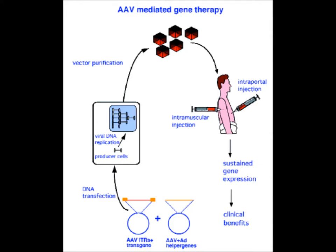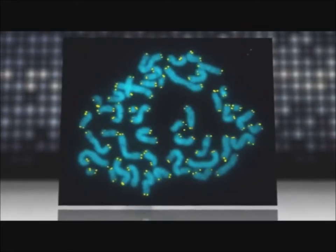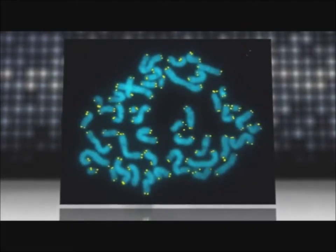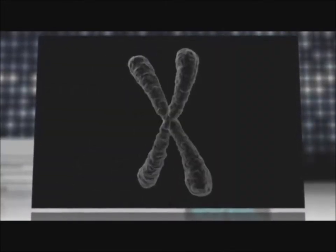Adeno-associated viruses are small and one-stranded. They can insert their material at specific sites on chromosome 19. Recently, these adeno-associated viruses have been used to treat blindness or any problems on the human retina.